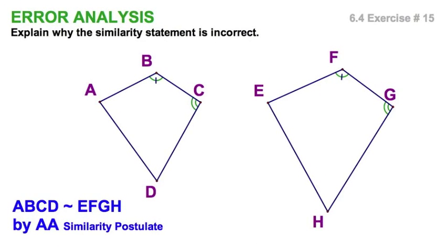Well, what could be wrong with this? Looks pretty good. Angle B and angle F are congruent. Angle C and angle G. So, why doesn't this work out? Well, it's very simple, the angle-angle is for triangles.